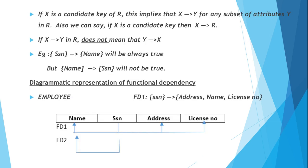The second property: if X→Y exists in R, that does not mean Y→X also exists. A dependency from X to Y does not imply Y to X. For example, SSN→name is always true — whenever SSN is repeated, name is repeated. But the reverse is not true: whenever name is repeated, SSN will not necessarily be repeated. So a functional dependency from X to Y is not the same as Y to X.